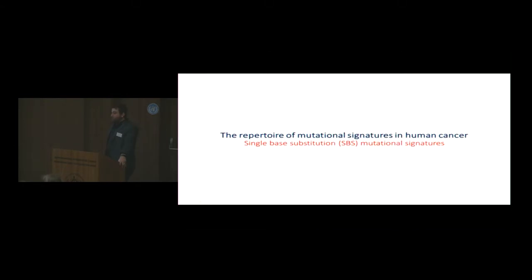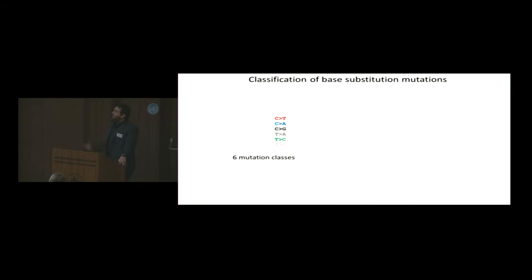I'm going to start with the single-base substitutions. Mike Stratton and I do share some slides, especially when it comes to introducing the different types of mutations. Single-base substitutions, there are six basic single-base substitutions: C to T, C to A, C to G, T to A, T to C, and T to G. We use these different colors to be able to show the different mutation types.